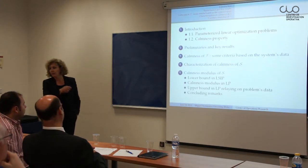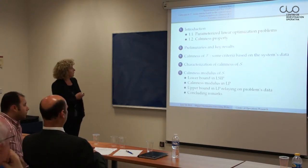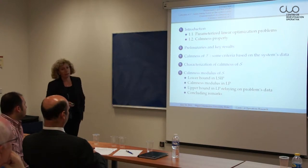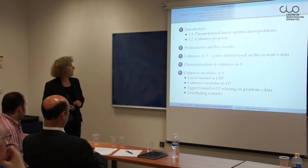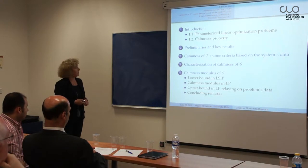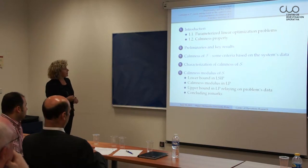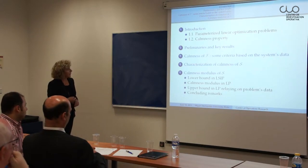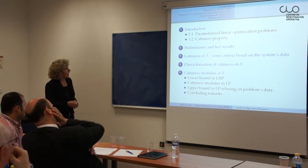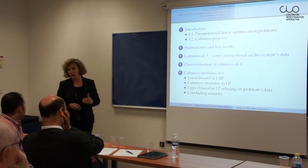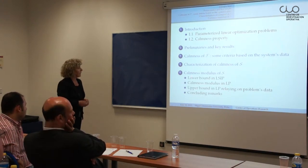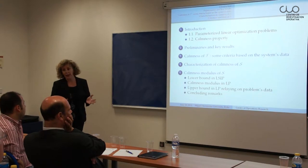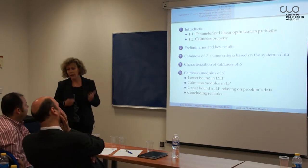The outline of the talk: first we present the model and the calmness property in the introduction, then some preliminary and key results, followed by an overview on calmness for the feasible set mapping, then a characterization of calmness for the optimal set mapping, and finally section 5 gathers results about the calmness modulus.